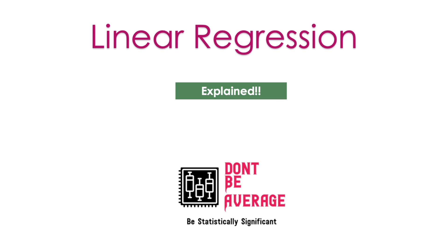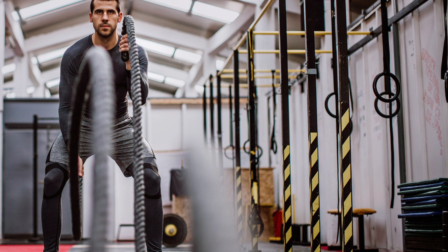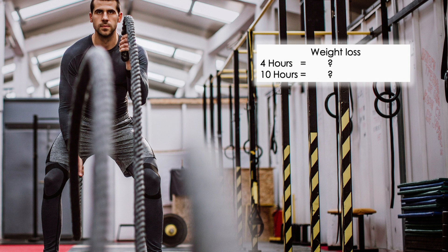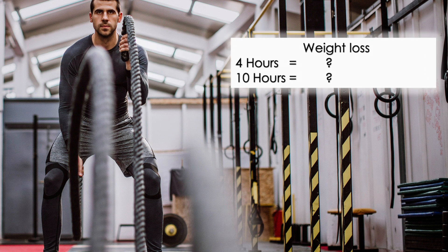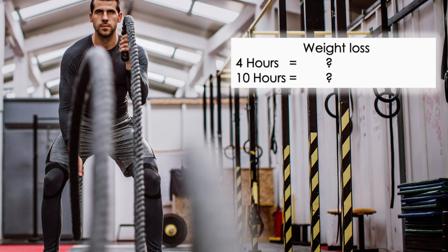So without further ado, let's jump into the video. Let's say you are working out and you want to lose weight. You are planning to put four hours into exercise every week. Won't you be interested to know how much weight you are supposed to lose by the end of the week? And what if you change your workout hours to 10 hours a week? How much you're going to lose in that scenario? So this is a simple example that you can solve using linear regression. And here we are actually predicting weight loss using number of workout hours.